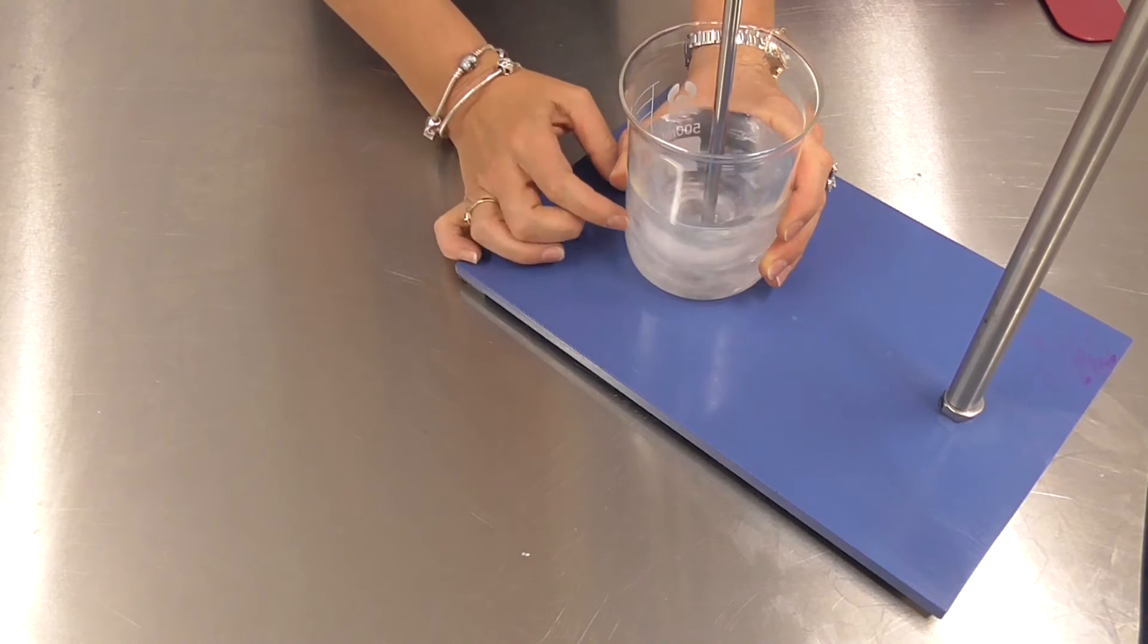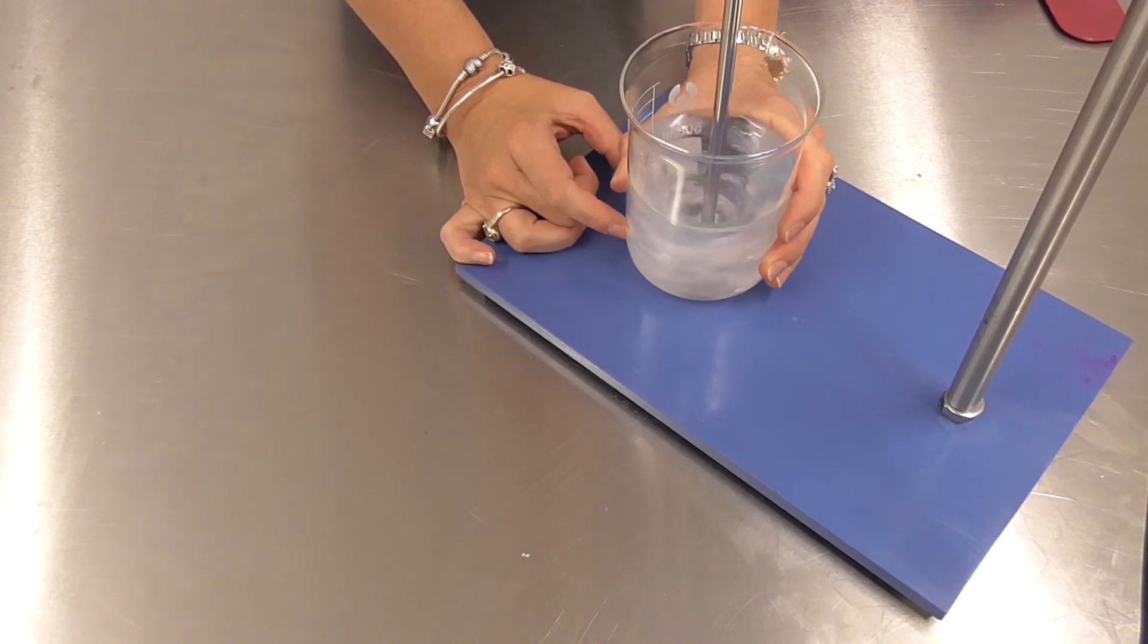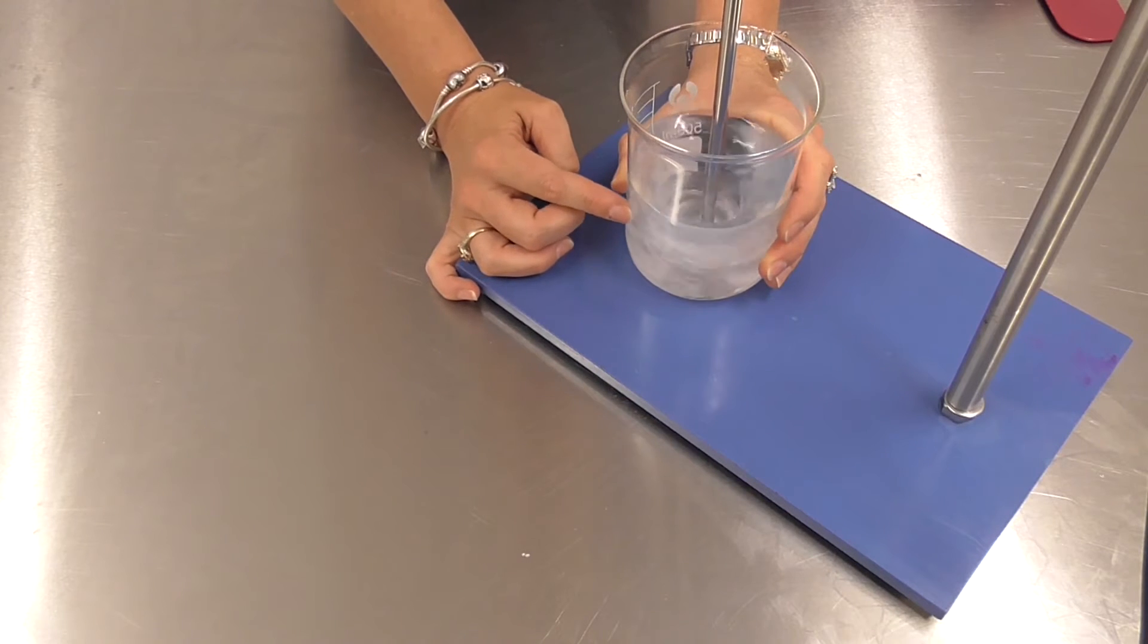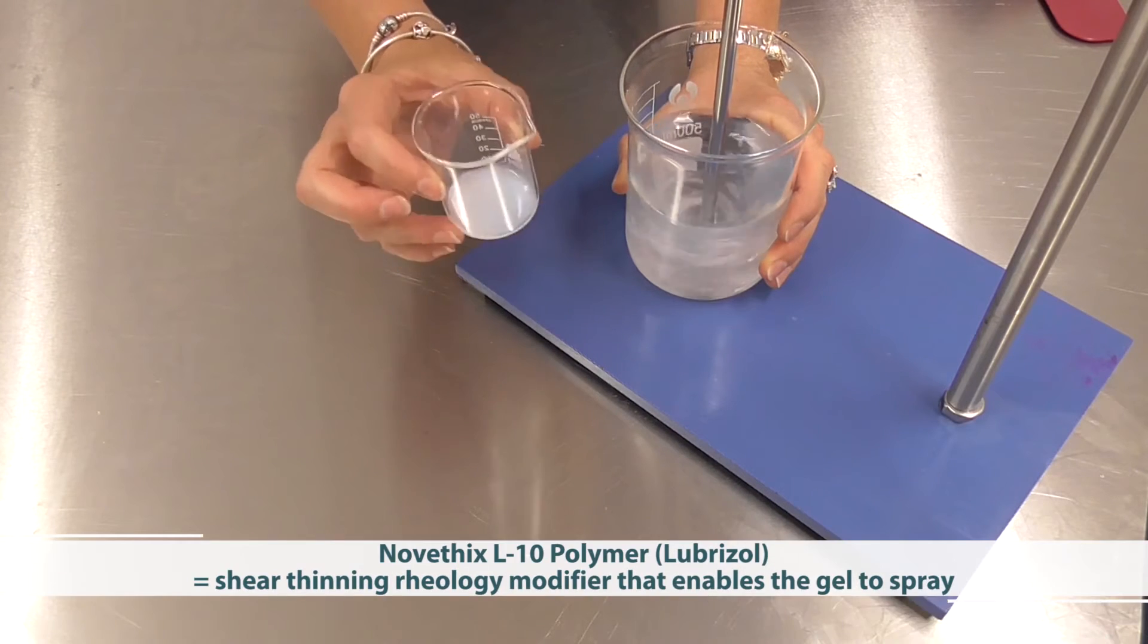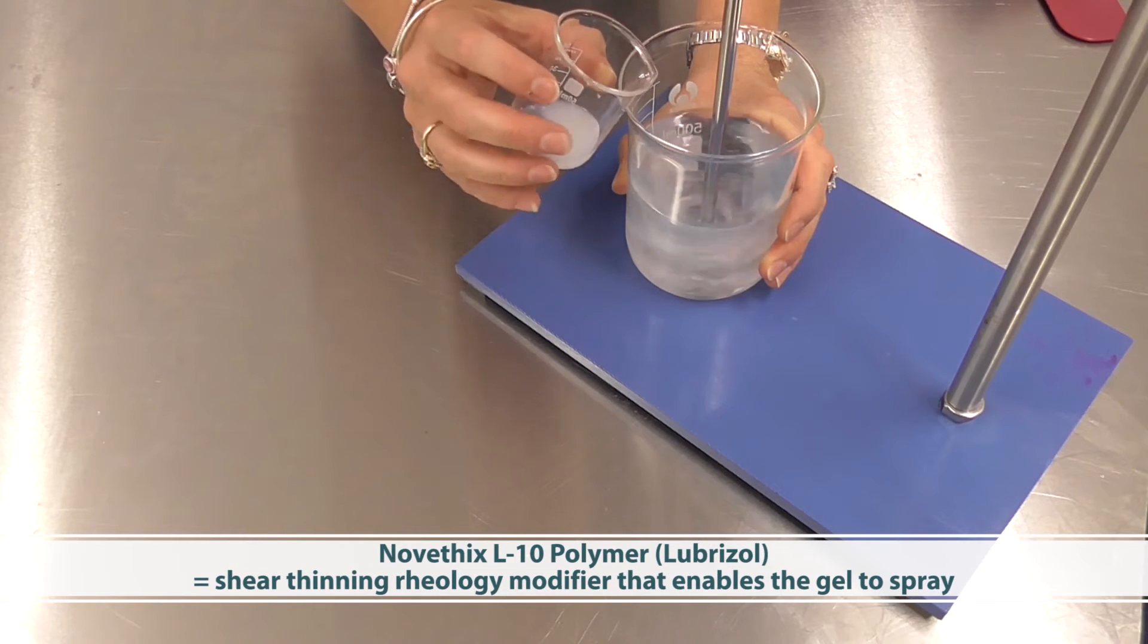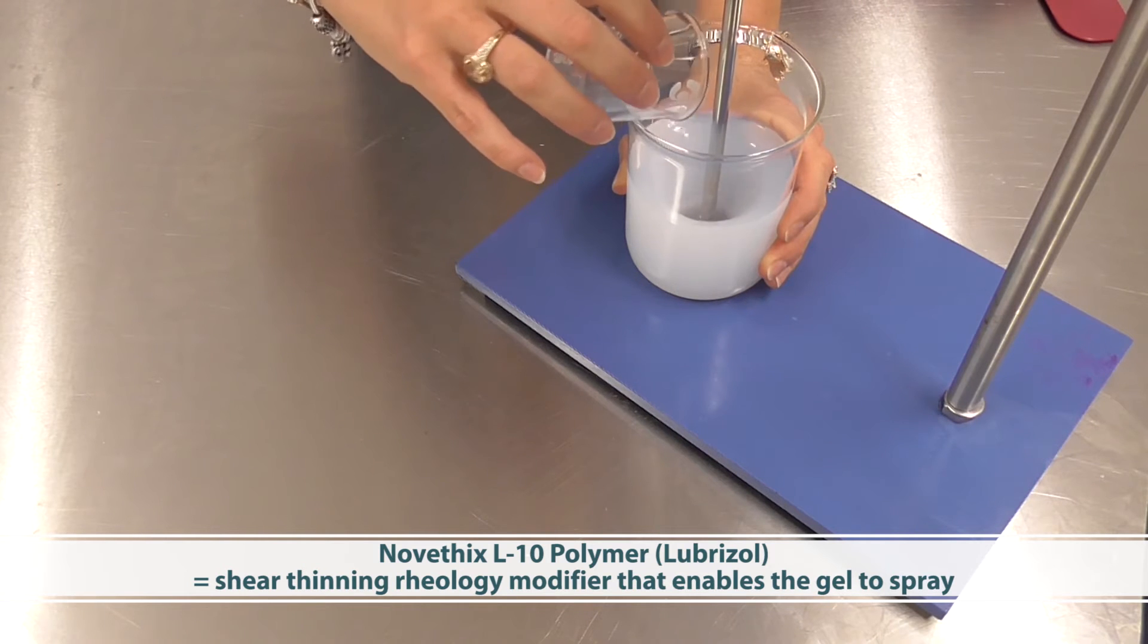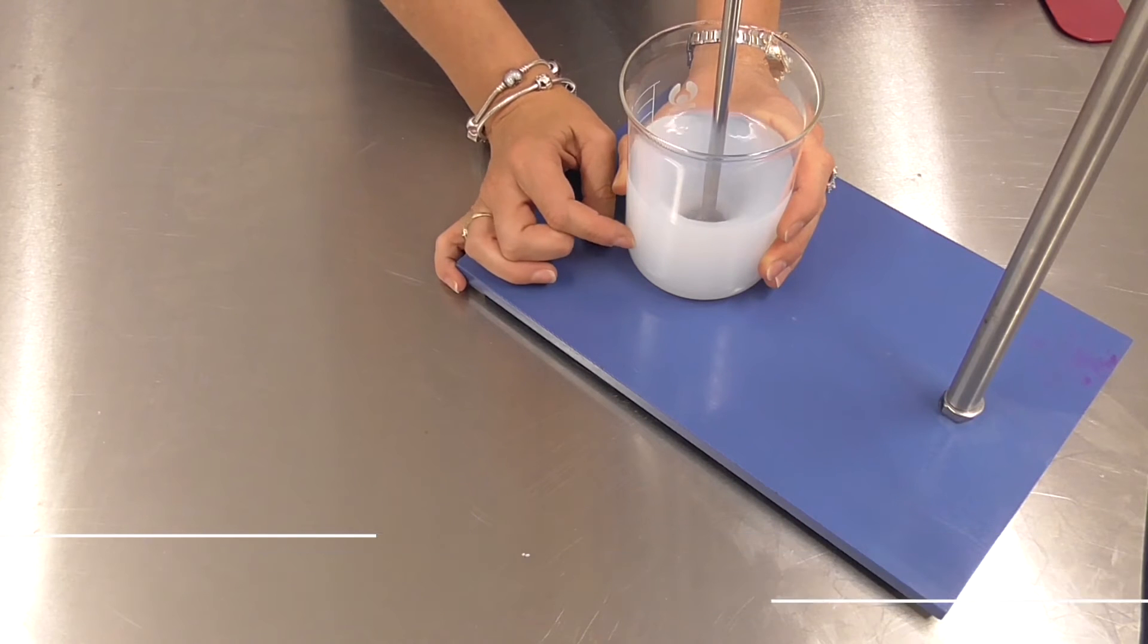Now it's really important that you allow the polymer plenty of time to hydrate before we neutralize so that we can get any clumps out and we end up with a beautifully smooth gel. I'm also going to add the really important material here, this is Novathix L10 polymer and this particular material is what enables us to spray the product.